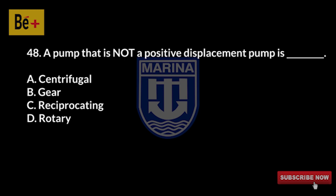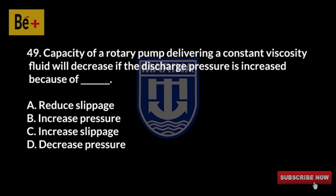A pump that is not a positive displacement pump is: A) centrifugal, B) gear, C) reciprocating, D) rotary. The answer is A, centrifugal. The capacity of a rotary pump delivering a constant viscosity fluid will decrease if the discharge pressure is increased because of: A) reduced slippage, B) increased pressure, C) increased slippage, D) decreased pressure. The answer is C, increased slippage.